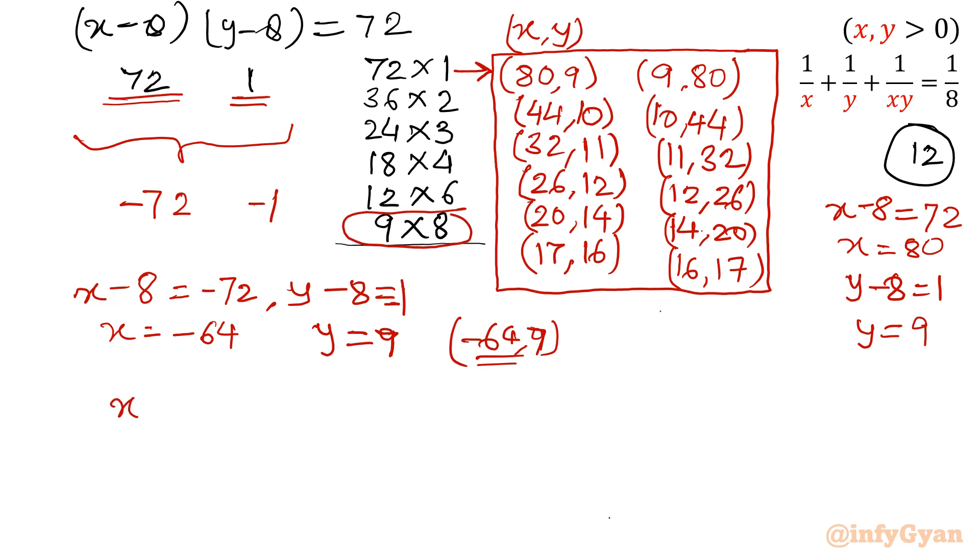So x-8, I will put -9, and y-8, I will put -8. So x will come out -1. If you will take -8 to the right, add 8 to both sides, and y will come out 0. This is unaccepted, and this is also not accepted as x is negative.